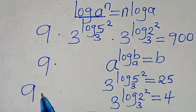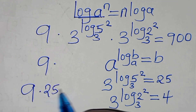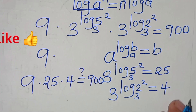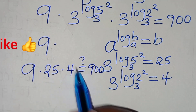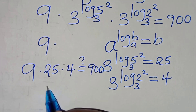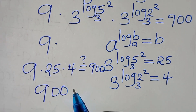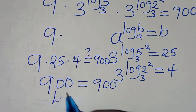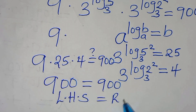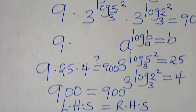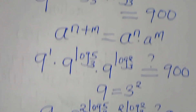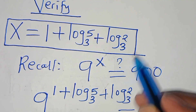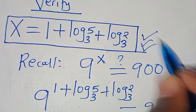Substituting this information, we have 9 times 25 times 4, which is supposed to give us 900. We find that 25 times 4 is 100, times 9 is 900. This is equal to 900. This implies that the left-hand side is equal to the right-hand side, and this confirms that the value of x, which is 1 plus log base 3 of 5, plus log base 3 of 2, actually satisfies the equation.